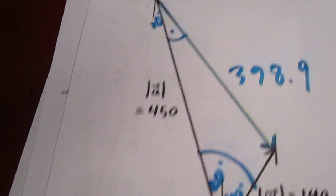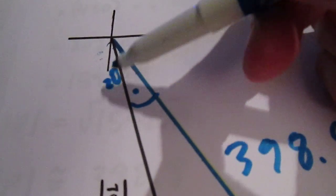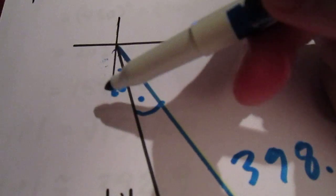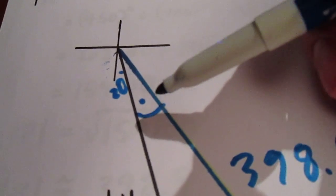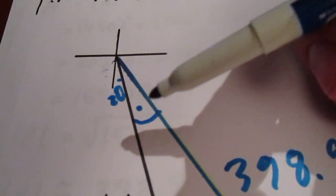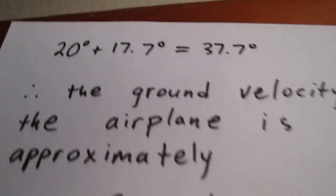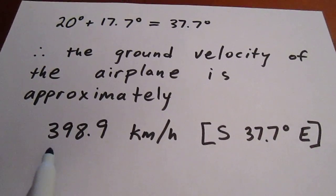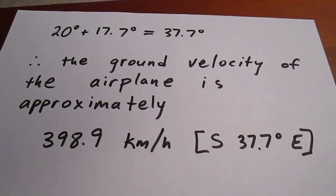We can go back then and say that our airplane is actually traveling south 37.7 degrees east. And so we can say the ground velocity of the airplane is magnitude coupled with direction.